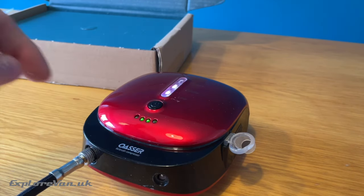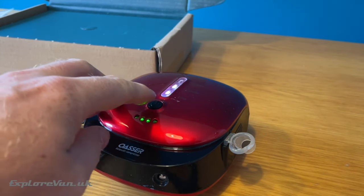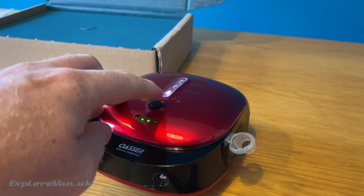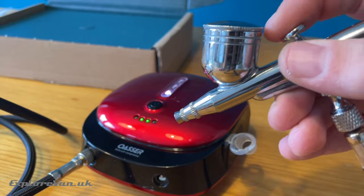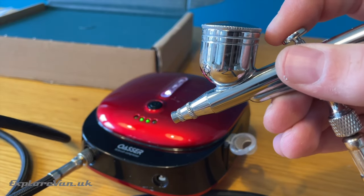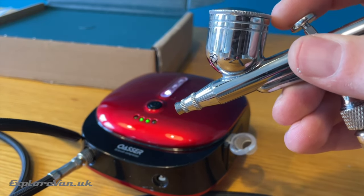The advantage of a compressor over the can of propellant is that you effectively have an unlimited amount of air. This compressor can run on 12 volts but also has a lithium battery allowing it to run wirelessly for around 90 minutes. It has three pressure settings.